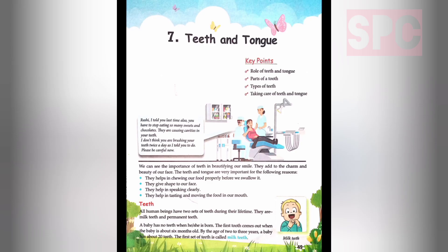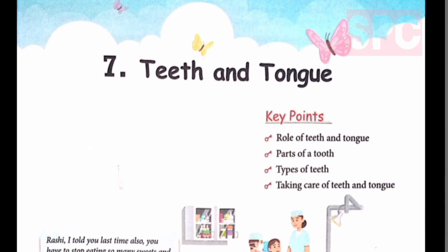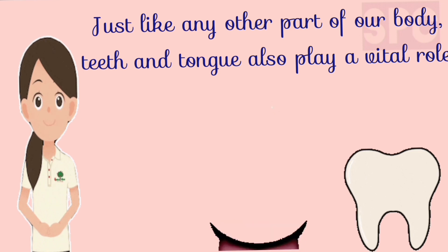Welcome students, today we are going to understand Chapter 7 - Teeth and Tongue. Based on our understanding, we will do the book exercises and question and answers of this chapter. In this chapter, we will understand the role of teeth and tongue, parts of a tooth, types of teeth, and taking care of teeth and tongue.